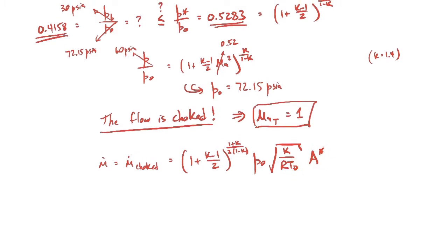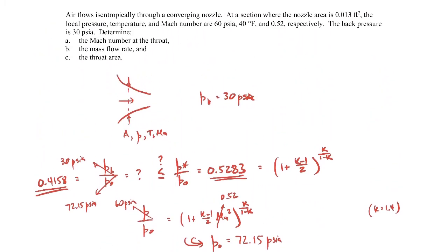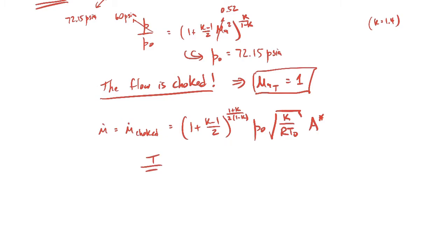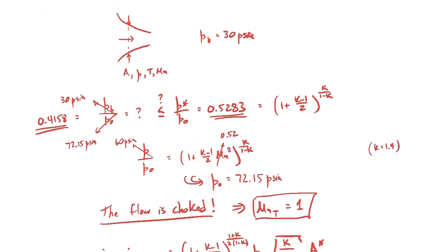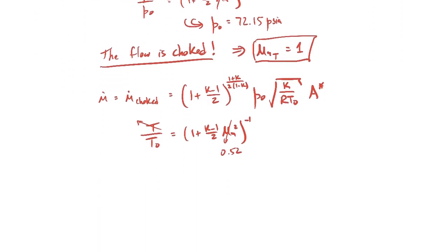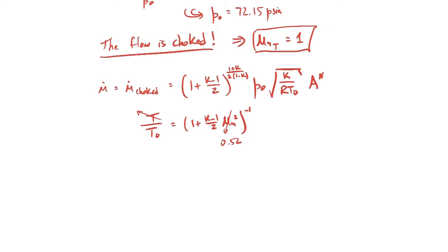To find the stagnation temperature, we use the stagnation temperature ratio expression. The Mach number is 0.52 and the static temperature at that location was given as 40°F. We must convert to an absolute temperature: 40°F converts to 500°R. Plugging those values into the stagnation temperature ratio expression gives a stagnation temperature of 527°R.